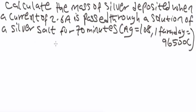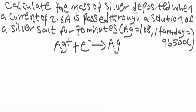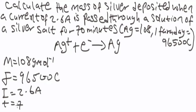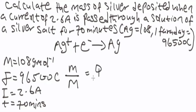In this electrolysis, the silver ion will lose one electron to yield a neutral silver atom. So our parameters are: molar mass M = 108 g/mol, Faraday's constant F = 96,500 coulombs, current = 2.6 amperes, time = 70 minutes. Since silver loses one electron, the number of moles of electricity n = 1.